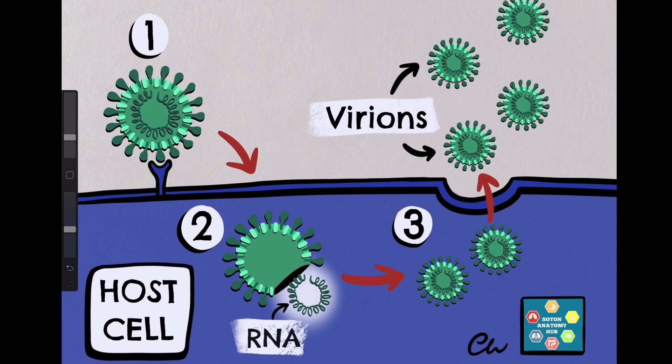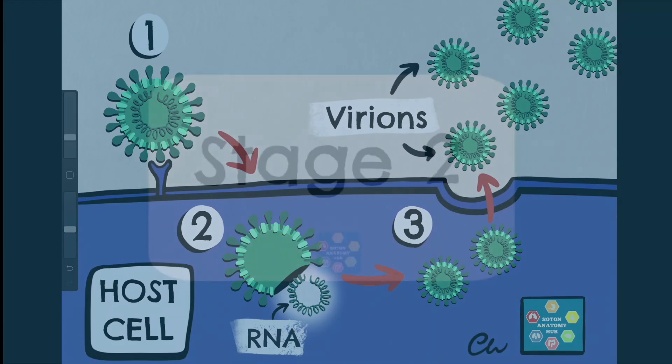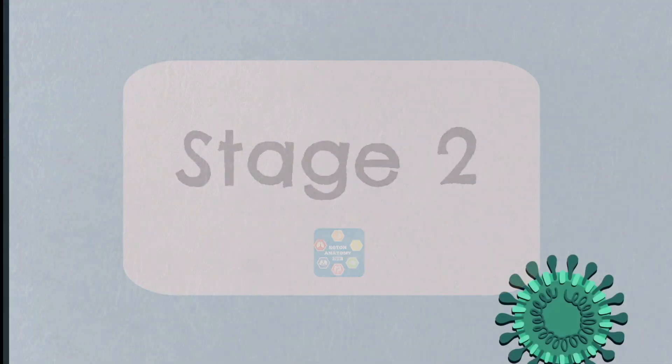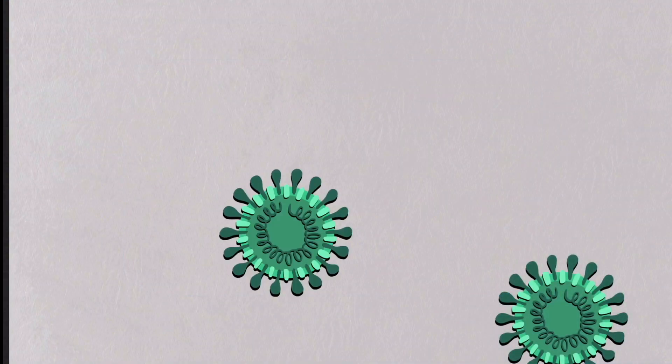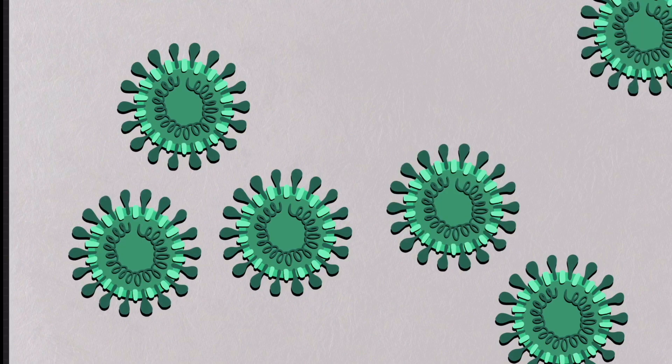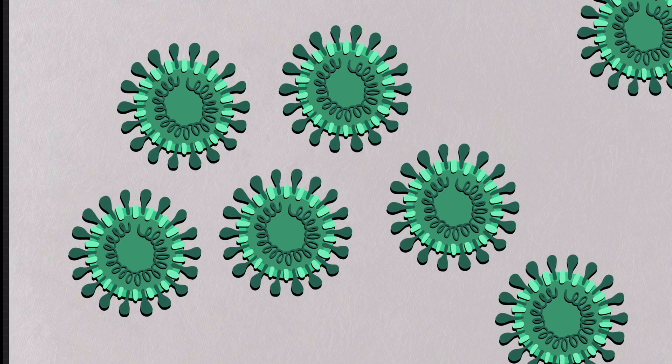In stage 2, the non-severe but symptomatic period, the number of virions increases exponentially, resulting in an immune response. That is, the host immune system attempting to eradicate the infection. This works quite well with most of the coronaviruses we know to infect humans, and so only mild symptoms are experienced.